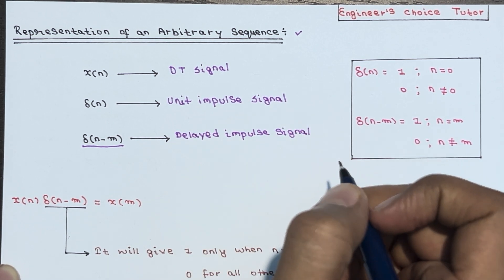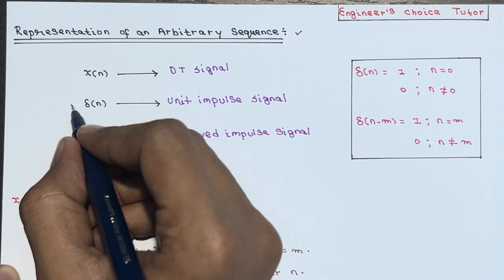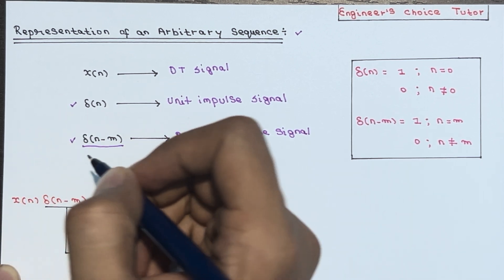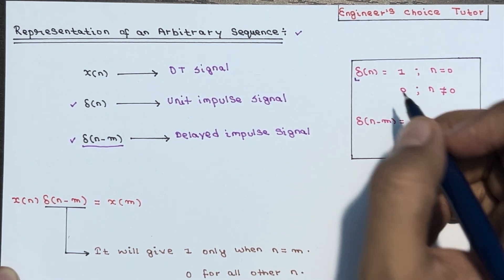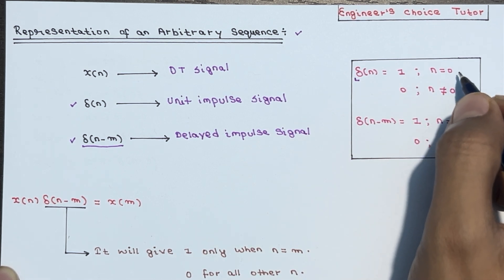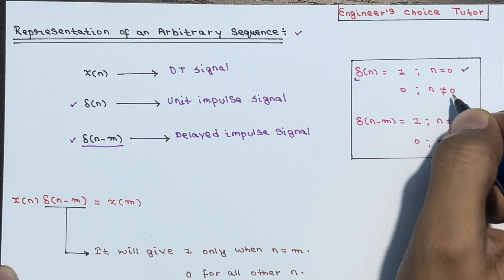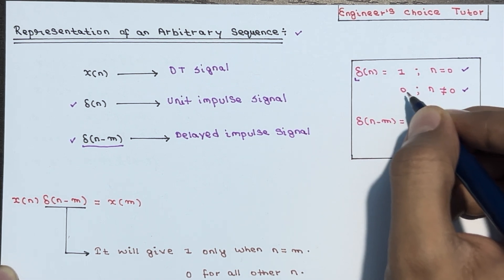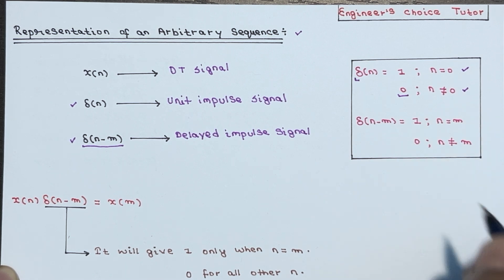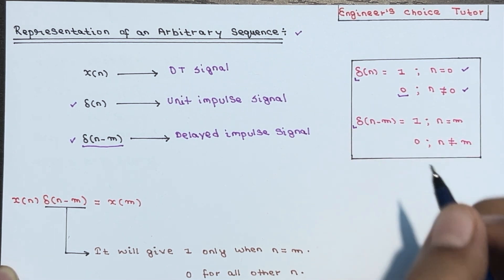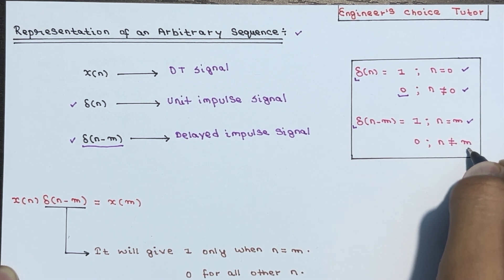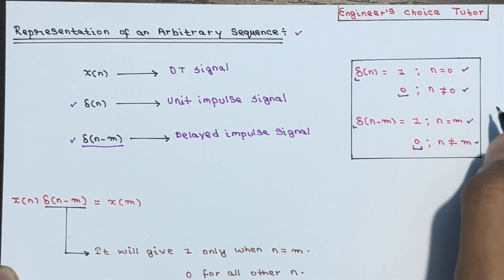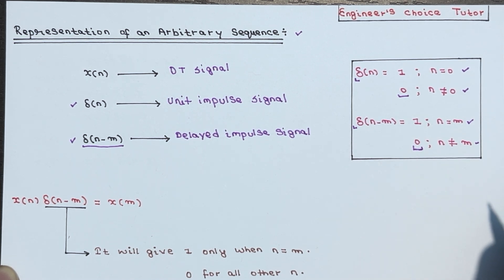Before going further, you should know the behavior of δ(n) and δ(n-m). δ(n) is equal to 1 when n is equal to 0, and 0 when n is not equal to 0. Similarly, δ(n-m) is equal to 1 when n is equal to m, and 0 when n is not equal to m. These two things you should remember — then only you will understand the next things easily.